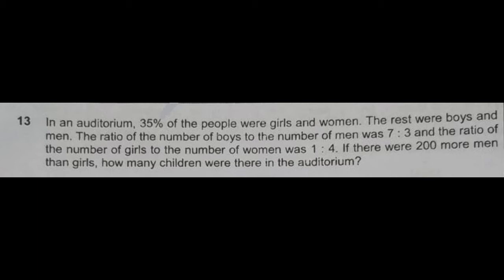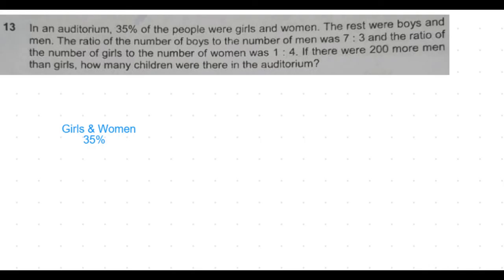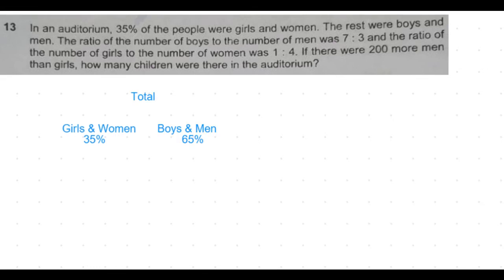If there were 200 more men than girls, how many children were there in the auditorium? So, the percentage of girls and women is given as 35 percent. That means the remaining 65 percent are boys and men.